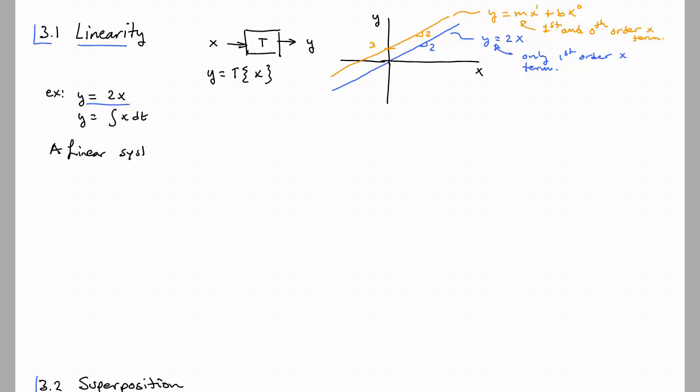A linear system satisfies two things. It satisfies scalability, also called homogeneity, and secondly, it satisfies additivity. These concepts in the end are simple, we just have some bigger terms for them.